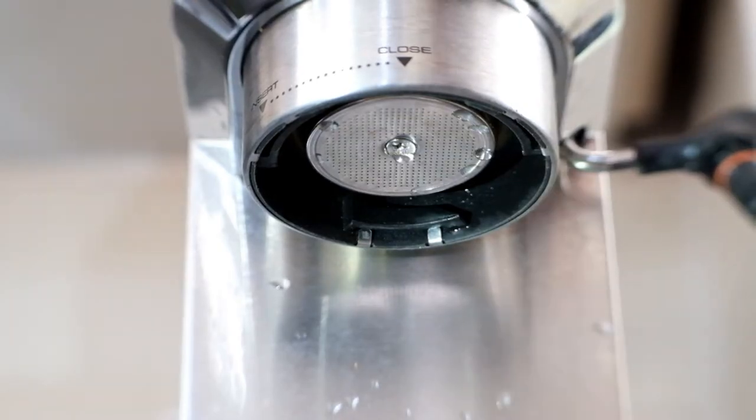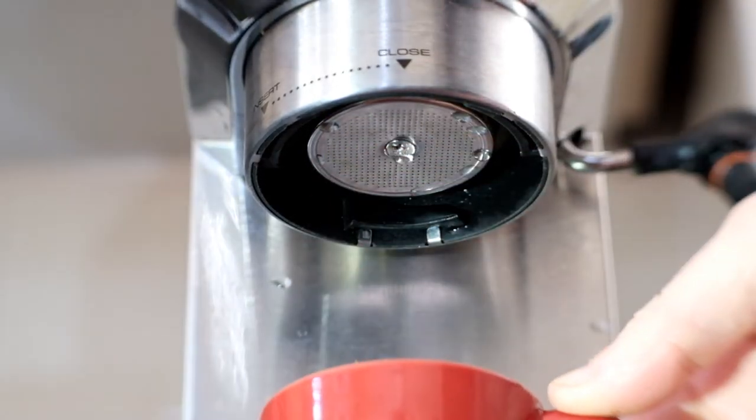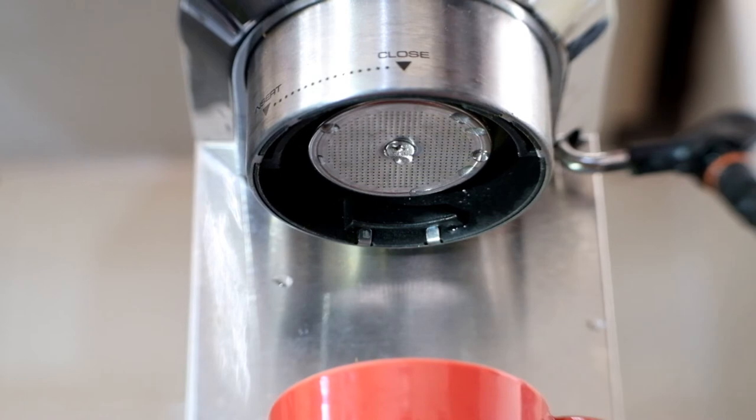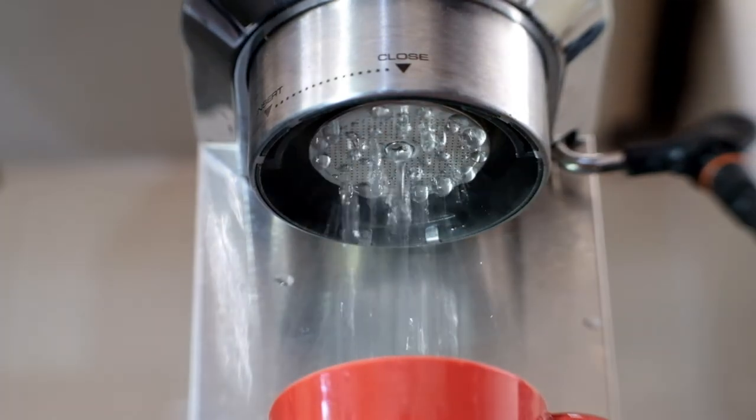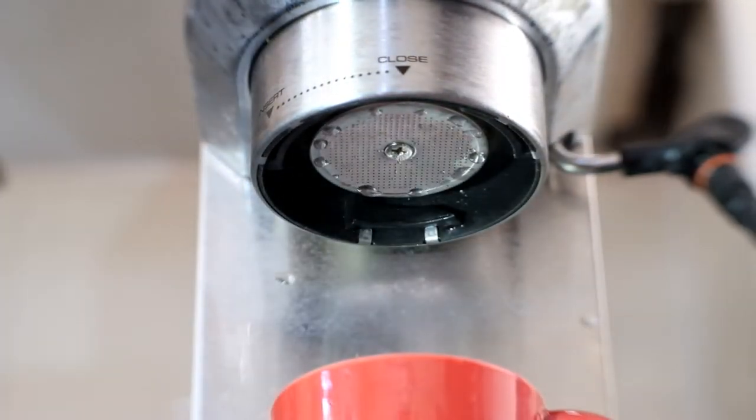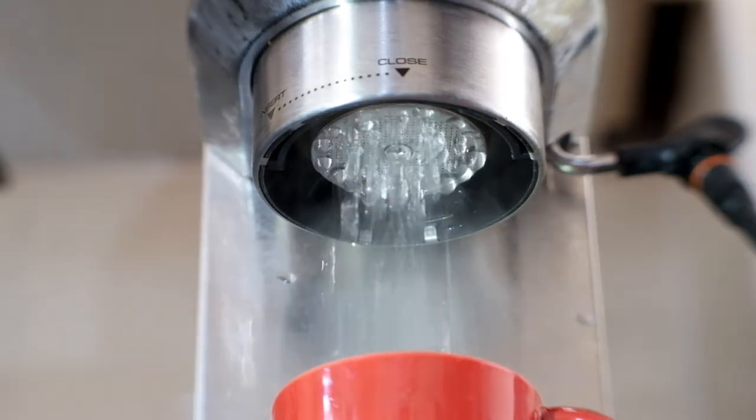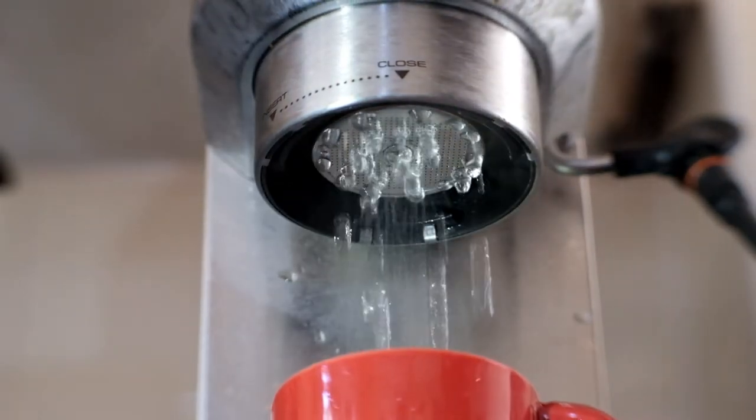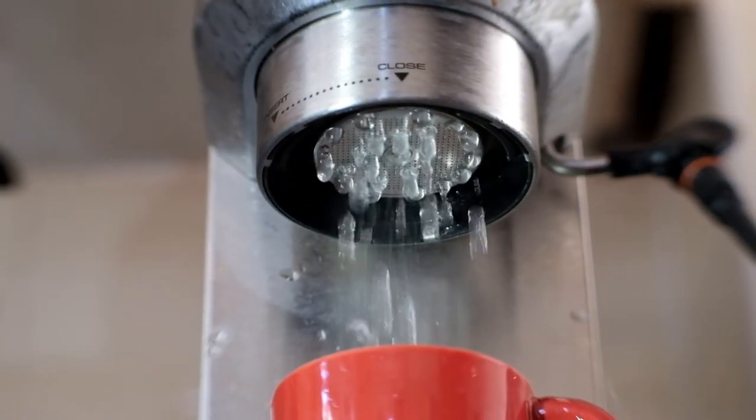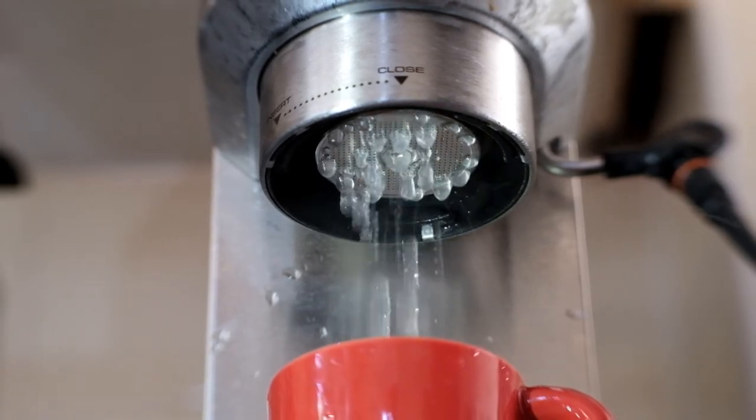Once I've got the coffee into the portafilter, I just run one more blank shot to make sure the shower head and the group head are all getting up to temperature and all ready to go. You can do two shots at this point instead of one, but again it just depends how much time you've got spare. Once we've got that in place, we're ready to go ahead and pull the actual shot itself.